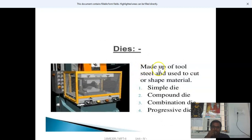Dies are made of tool steel and used to cut or shape material. There are different types of dies: simple die, compound die, combination die, and progressive die.